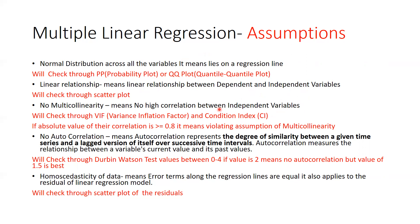There should not be any high correlation between independent variables. How do we check this multicollinearity? Through VIF — the Variance Inflation Factor — and the condition index. The absolute value of their correlation should be checked; if it is greater than 0.8, that means the assumption of multicollinearity is being violated.